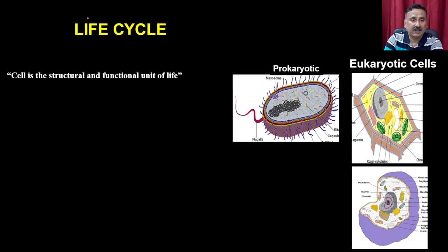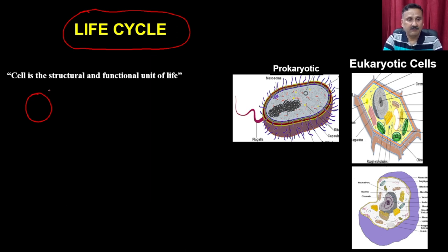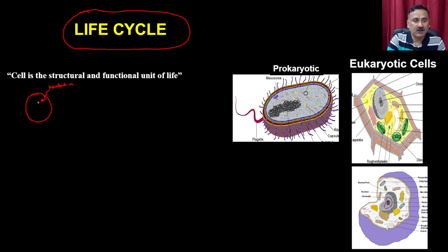Let us discuss about what is the life cycle of a cell. If you think about the life cycle of a cell, it starts with a cell — whether it is a prokaryotic cell or the eukaryotic cell. When the cell takes up nutrition from the outside, it generates energy through catabolic reactions.